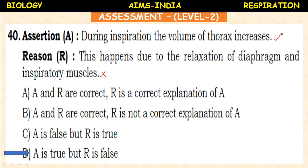Relaxation of the diaphragm and inspiratory muscles means the ribs will contract and internal air pressure will increase, causing air to rush out. But during inspiration, the volume of the thoracic cavity increases because the diaphragm comes down and lowers, and the chest expands.